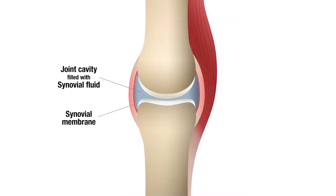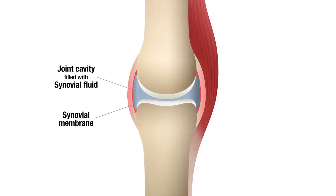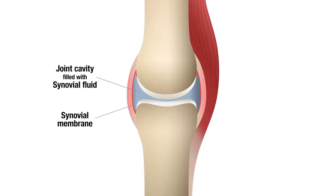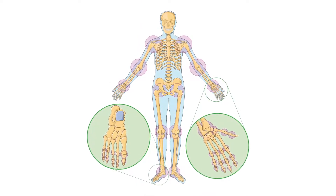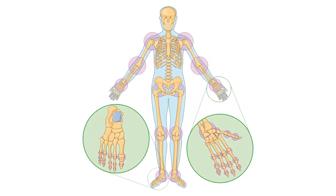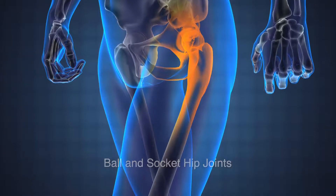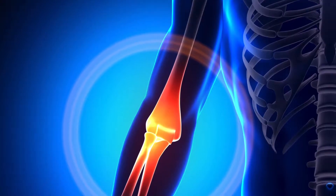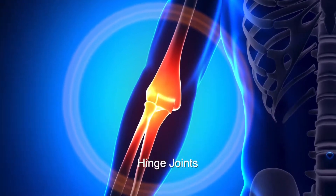Joints are allowed to move freely by being enclosed in a capsule, a synovial membrane full of synovial fluid, which acts like oil to lubricate the joint. The human skeleton has two main types of synovial joints: hinge and ball and socket. Ball and socket joints are found in the shoulder and hip, while the knee, like the elbow and ankle, are hinge joints, which work like the hinges of a door.